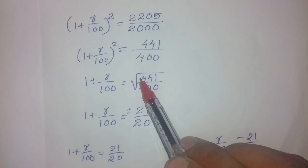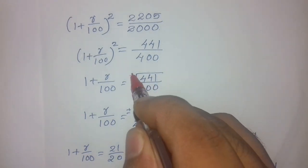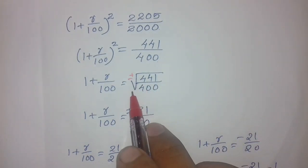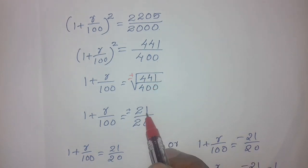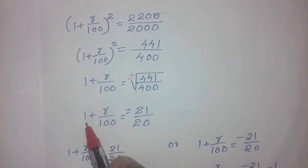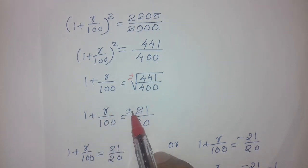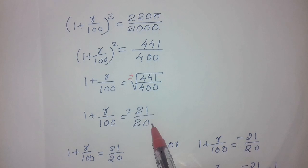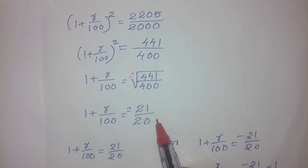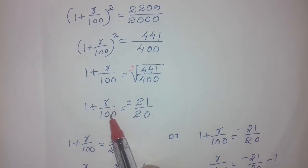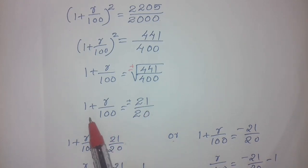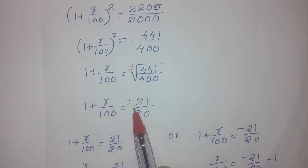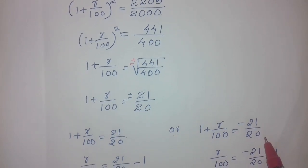Taking the square root of both sides, the square root gives plus or minus. The square root of 441 is 21, and the square root of 400 is 20. So 1 plus r by 100 is equal to plus or minus 21 by 20. This gives two cases: 1 plus r by 100 equals positive 21 by 20, or 1 plus r by 100 equals minus 21 by 20.